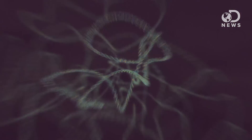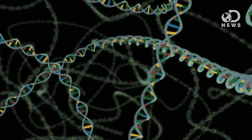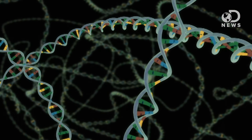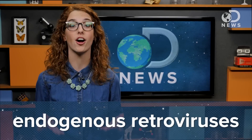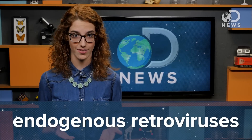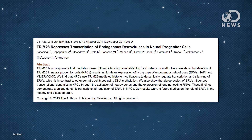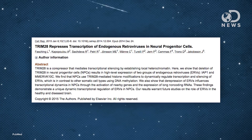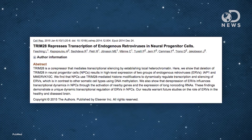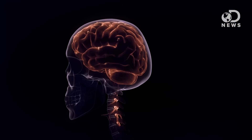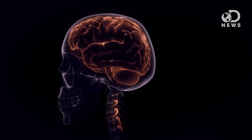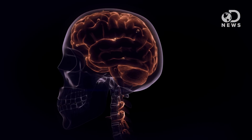Fun fact: our DNA contains a lot of virus DNA — over 100,000 pieces of it. Over 8% of our DNA is made up of so-called endogenous retroviruses. A recent study by Lund University in Sweden indicates that just such a virus might be responsible for our superpowered Homo sapien brains.